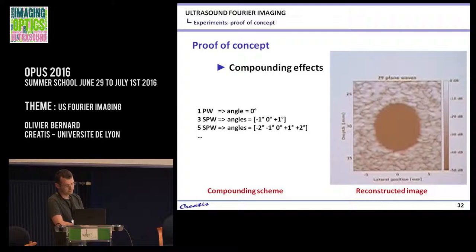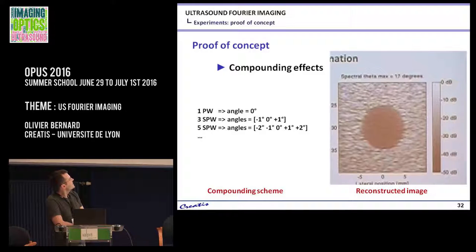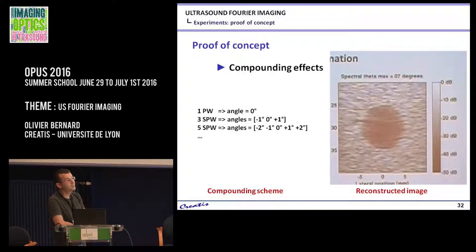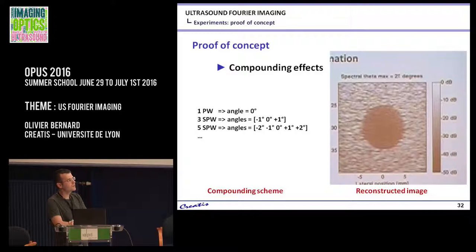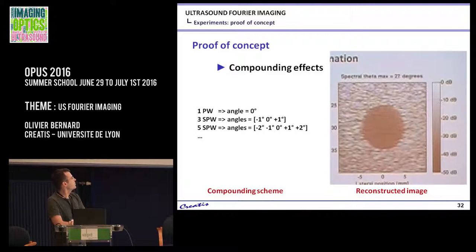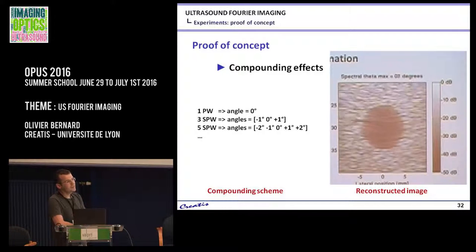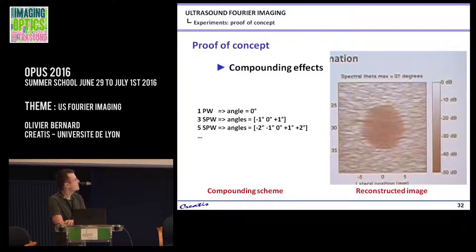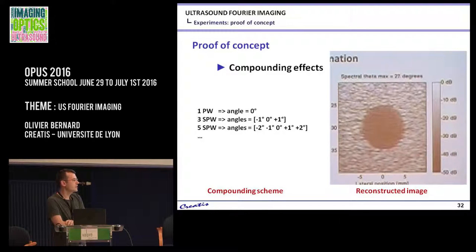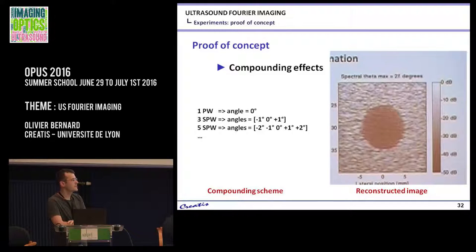Question about how to choose the limit angles for the algorithm. The angle limits are easy to estimate because they are linked to the spectral properties — the pitch, central frequency, and bandwidth. The parameter that is harder to tune is the radial sampling, because if you use a coarse one, you get intrinsic smoothing of the image: perfect for contrast but not for resolution. It's a trade-off. The directivity pattern of the elements has not been optimized — they just used what the Verasonics equipment provides.